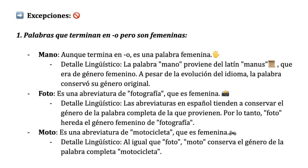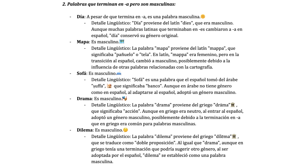There are some exceptions to that rule. For instance, there are some words that end in O but are feminine, such as mano. Even though it ends in O, it's a feminine word. As a linguistic detail, the word mano comes from the Latin manus, which was feminine. Despite the evolution of the language, the word retained its original gender. Another exception is the word foto, or the word moto — motorcycle — which is actually an abbreviation of motocicleta, which is feminine. Just like foto, moto retains the gender of the full word motocicleta, or fotografía in the case of photo.